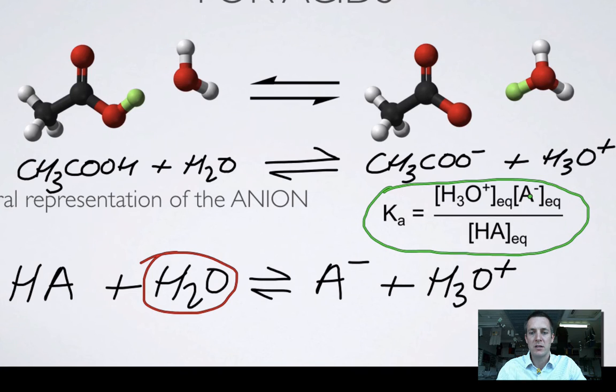the anion from our acid, multiplied by the concentration of H3O plus, divided by the concentration of the undissociated acid on the bottom. So this is why it's called an acid dissociation constant.